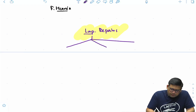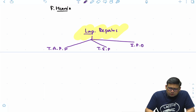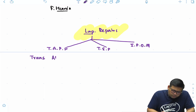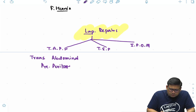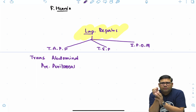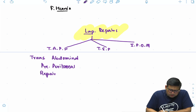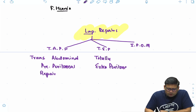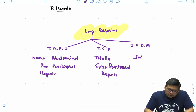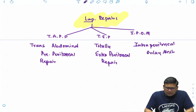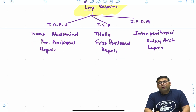In laparoscopic hernia repair, we have three microscopic repairs: TAPP (transabdominal preperitoneal repair), TEP (totally extraperitoneal repair), and IPOM (intraperitoneal onlay mesh repair). IPOM is more preferred for ventral hernias. In routine classes I shall discuss onlay, sublay, inlay, overlay, and underlay in detail.